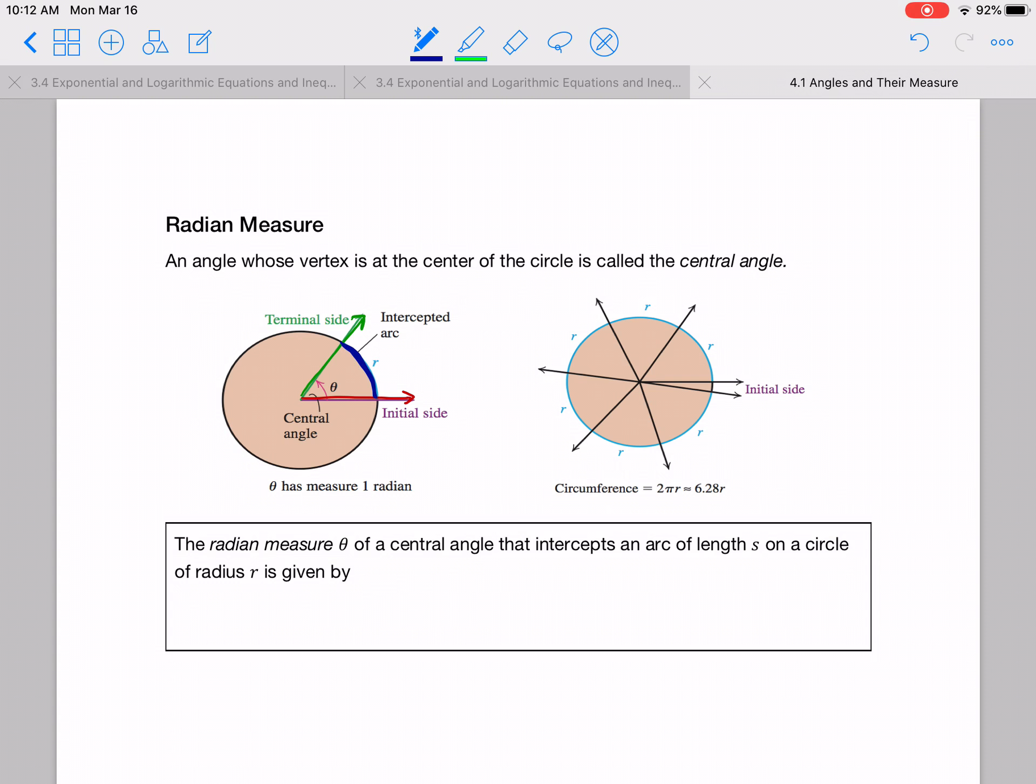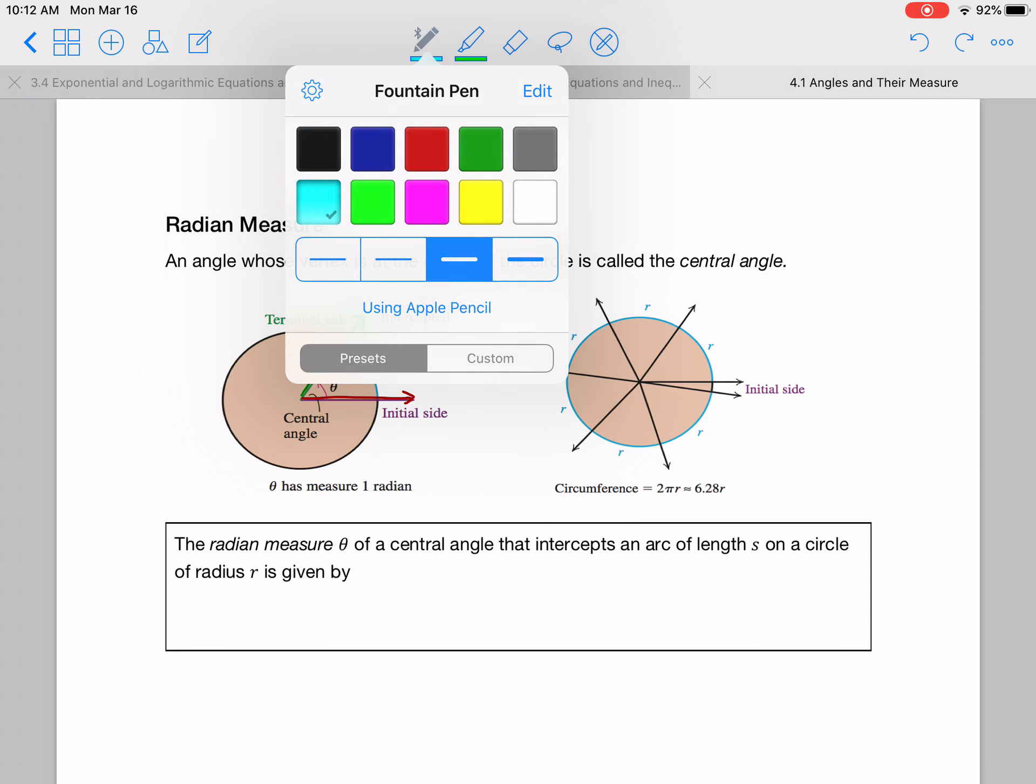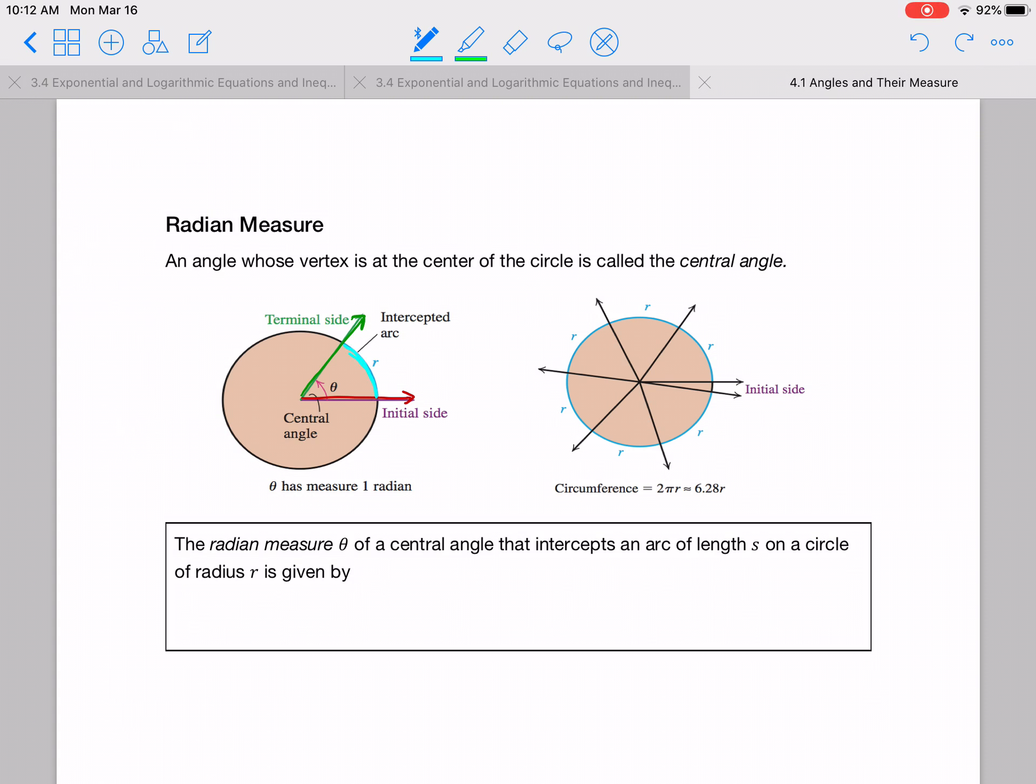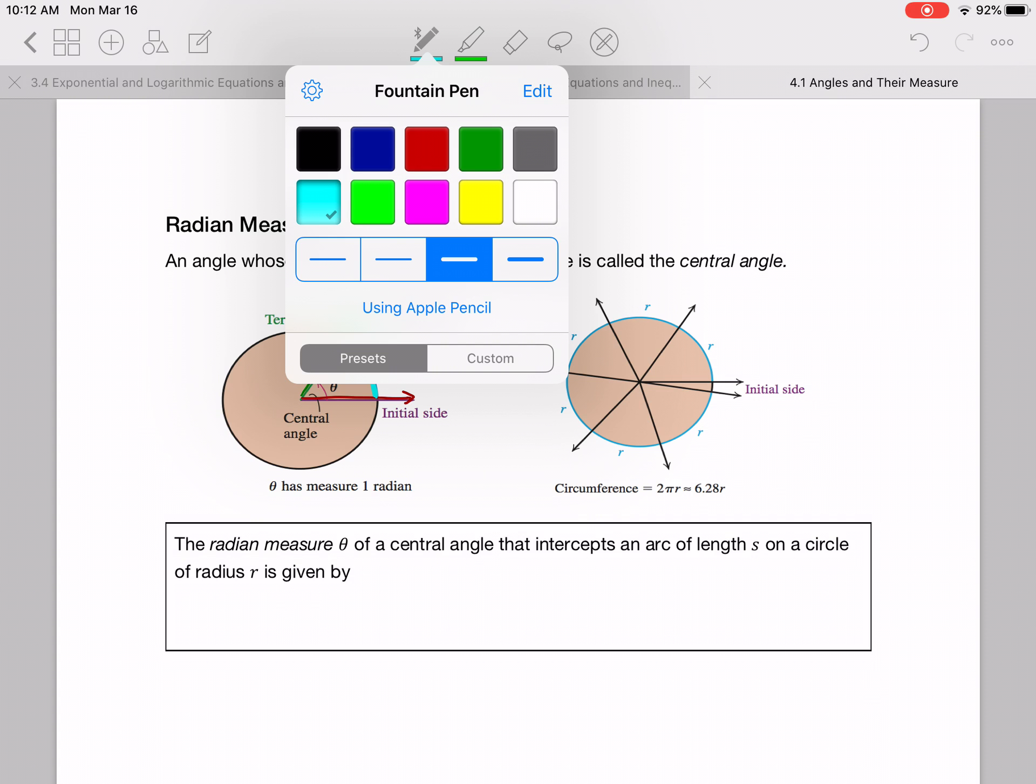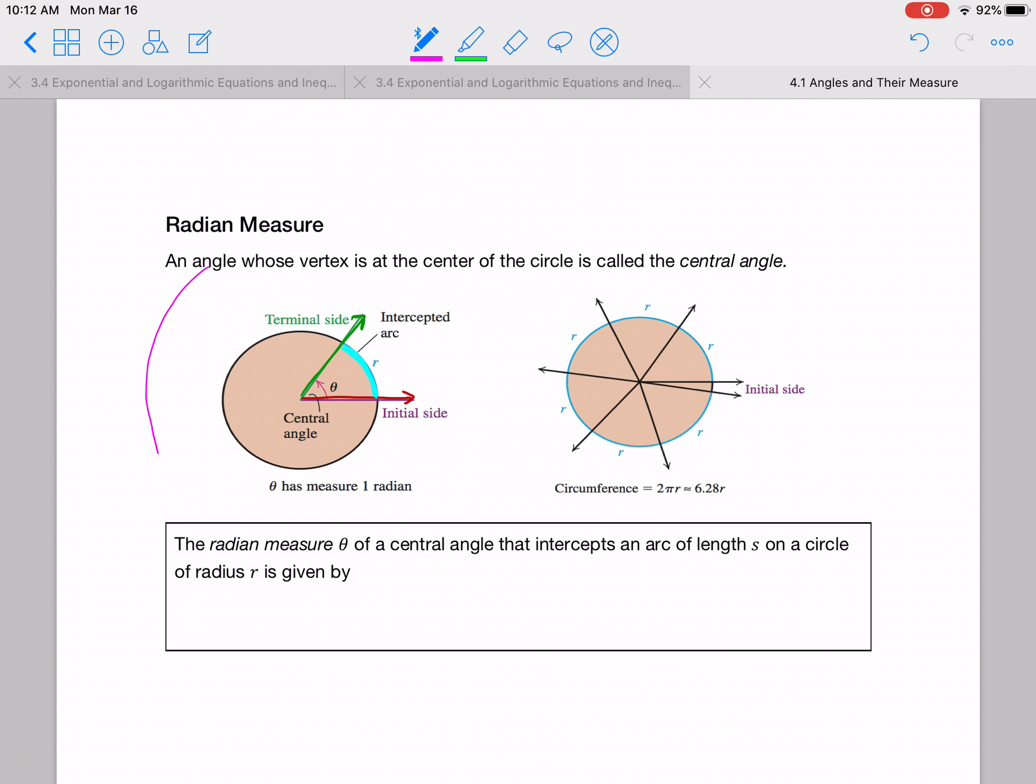Well, that's going to be some fraction of the entire way around the circumference of the circle. And we can even apply this out to larger circles. So if you had a circle out here that was even larger, if we did the same angle, we'd end up going around the same ratio of the whole circle.